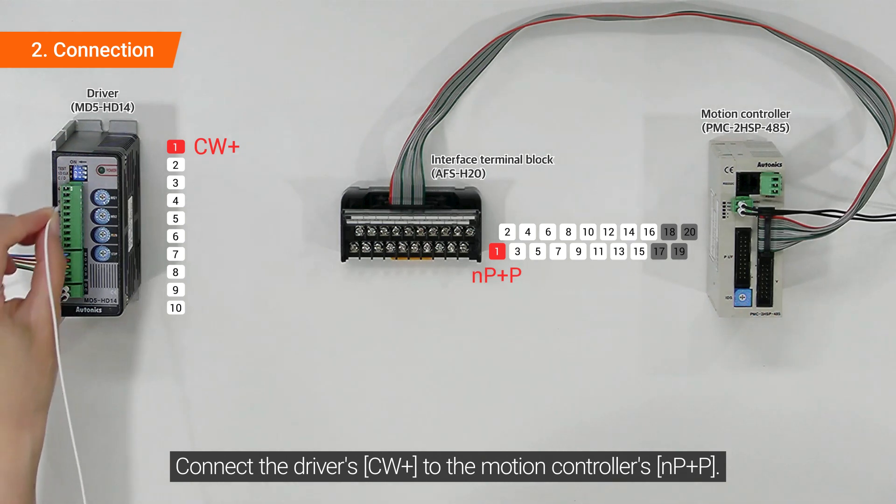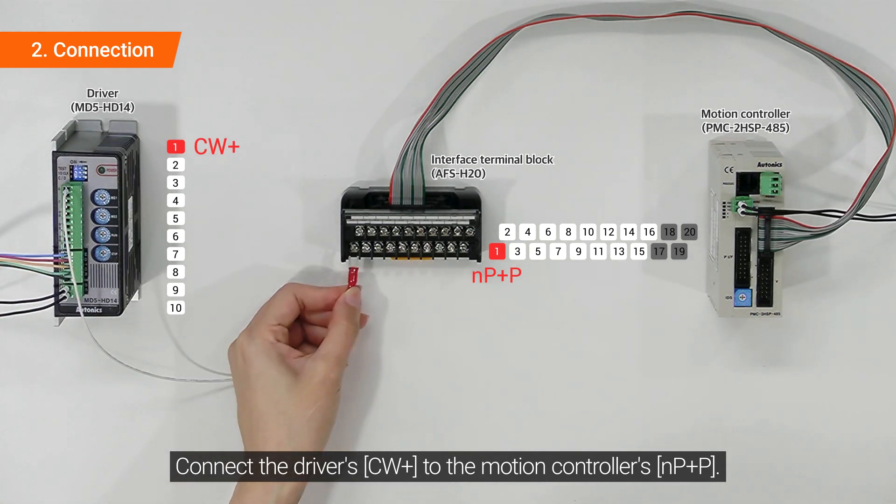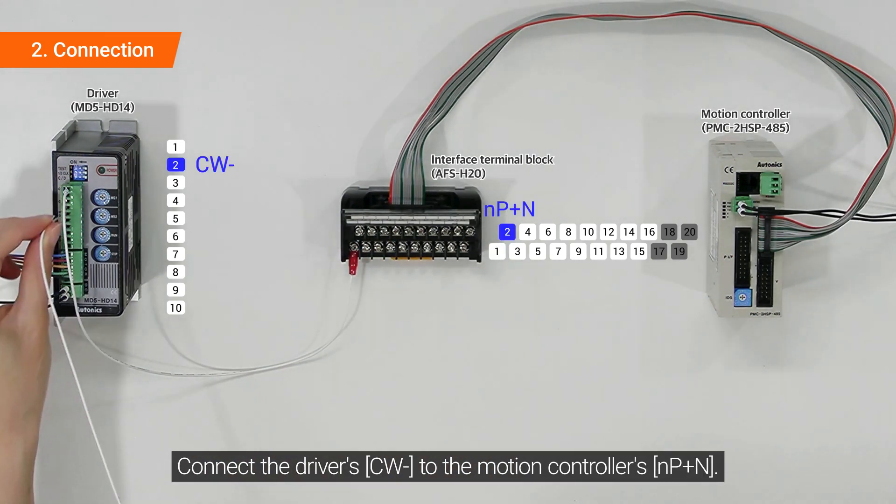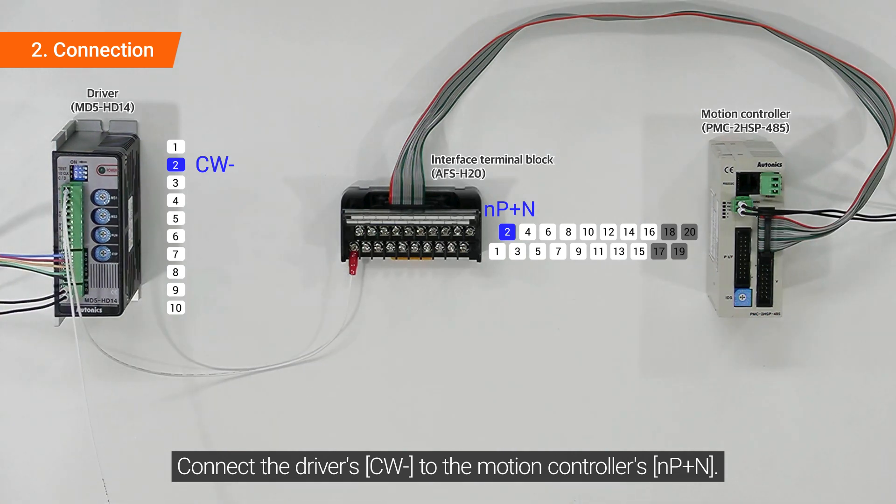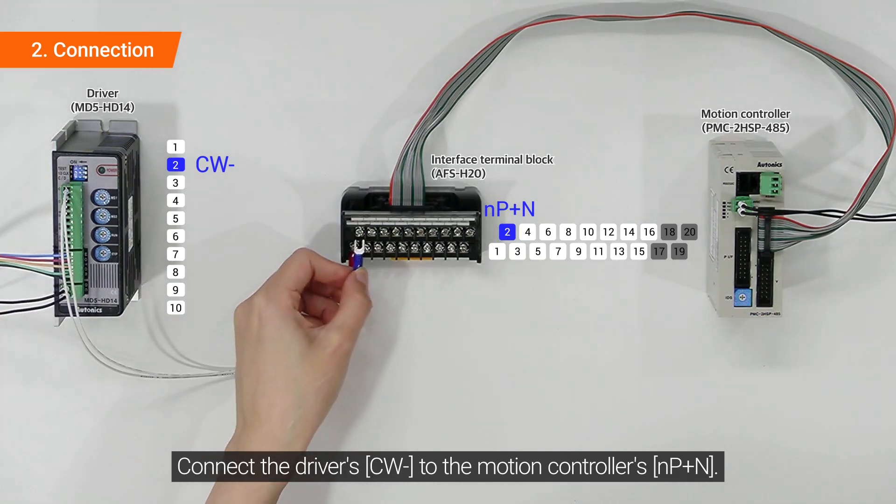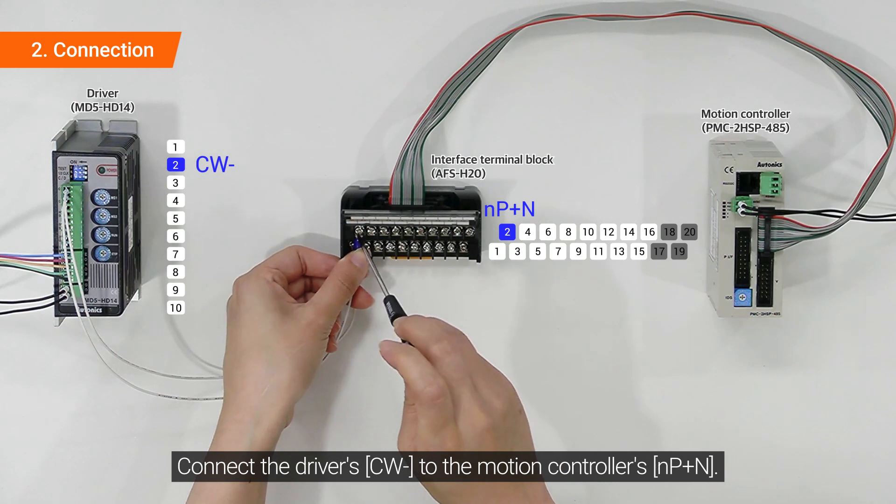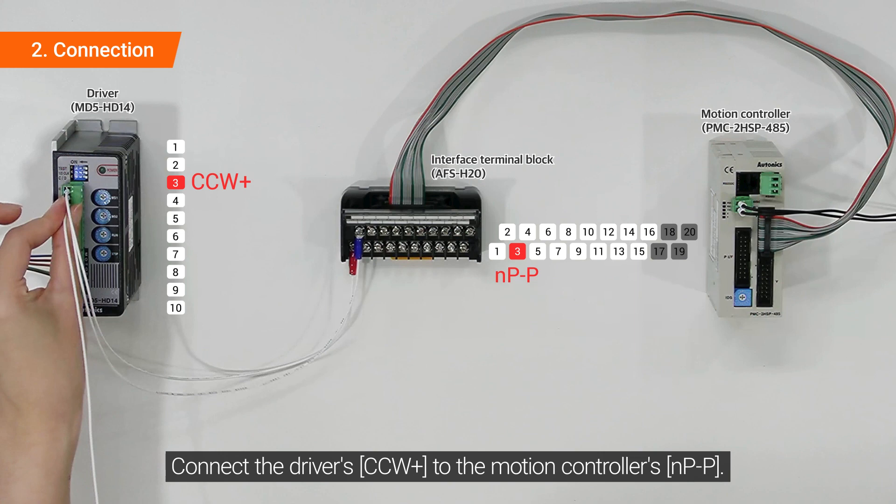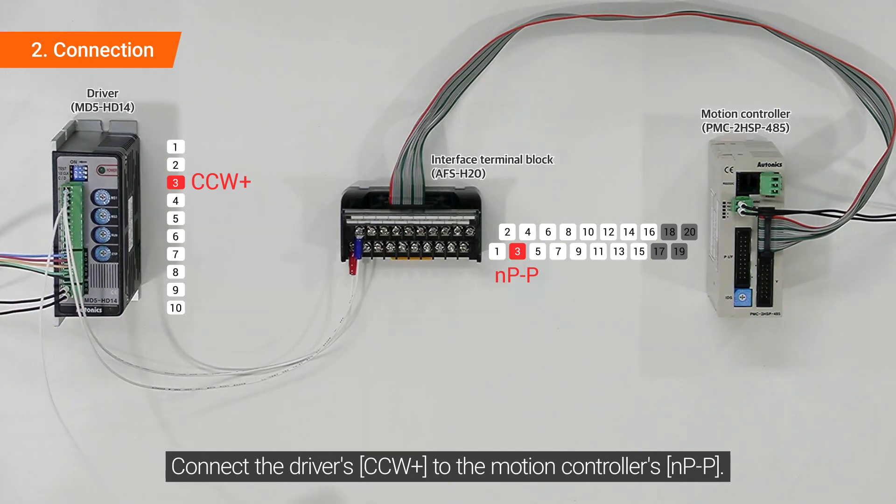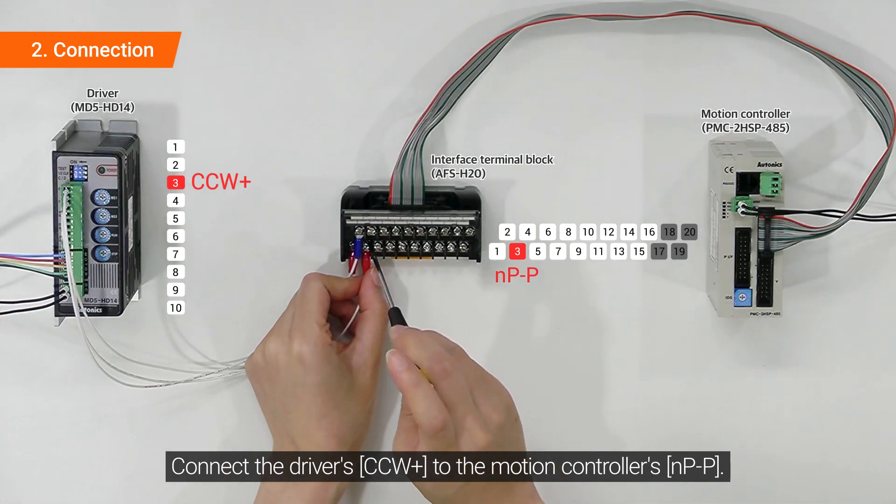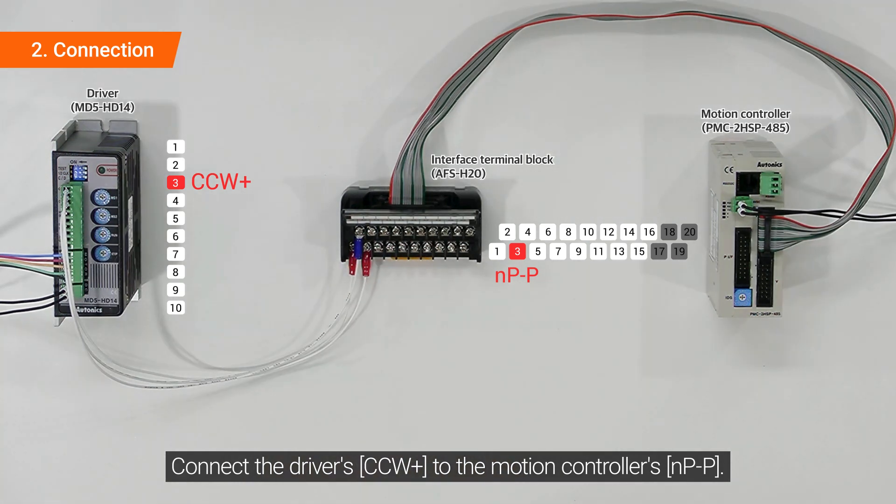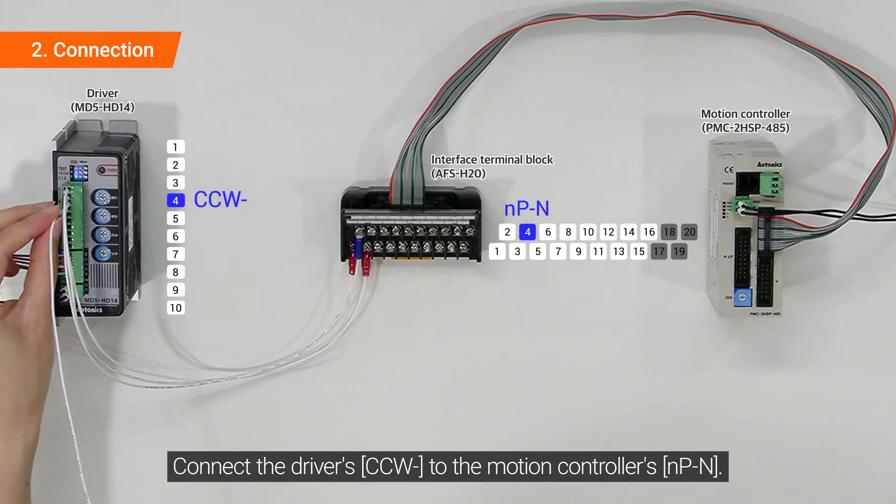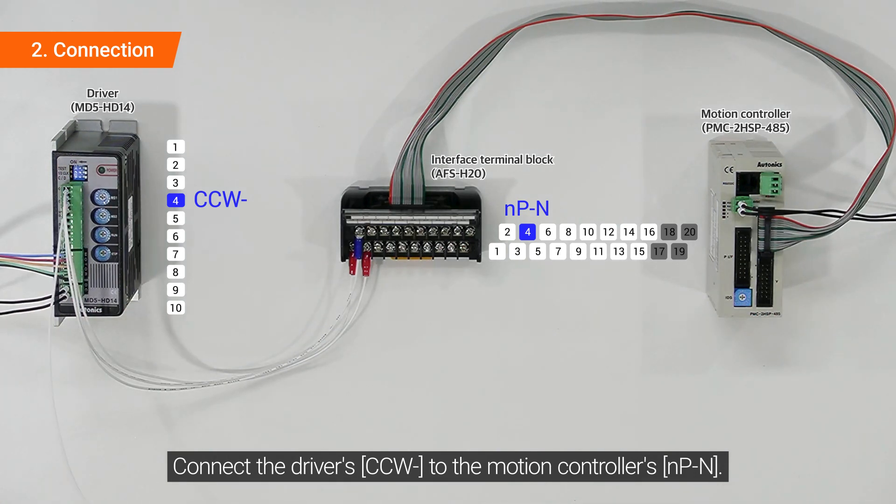Connect the driver's CW+ to the motion controller's NP+P. Connect the driver's CW- to the motion controller's NP+N. Connect the driver's CCW+ to the motion controller's NP-P. Connect the driver's CCW- to the motion controller's NP-N.